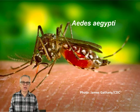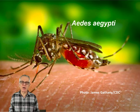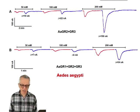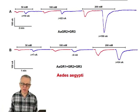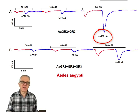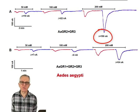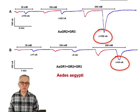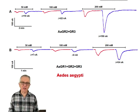We did the same with Aedes aegypti, which also has three receptors. It had been claimed that GR1 and GR3 were responding. We did the same experiment: the top trace shows Aedes aegypti GR2 and GR3, and the bottom trace shows GR1, GR2, and GR3. At 200 millimolar sodium bicarbonate, the binary response was 100 nanoamps, and with the ternary receptor GR1, GR2, and GR3, the response was reduced to 54 nanoamps.